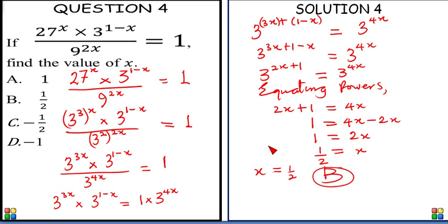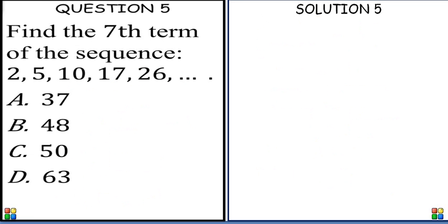We now move on to question 5. Question 5: Find the 7th term of the sequence 2, 5, 10, 17, 26, and so on and so forth.